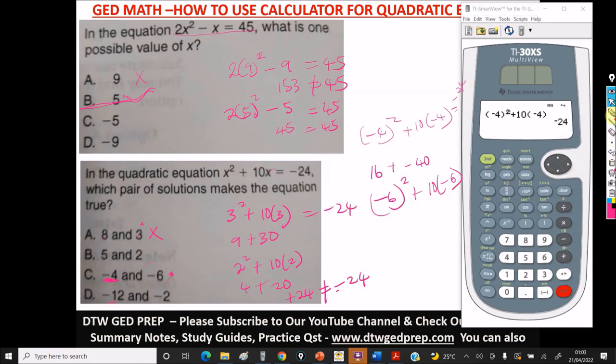So we have -6. So here, clear. So we do in parentheses negative 6, close the parentheses. When you put the square in here, if you put the square before closing parenthesis, you're going to get a different answer. Let me first get the right answer, then I'll show you so you don't make a mistake. So you do the square, then plus 10 in parentheses, negative 6, close the parentheses, enter. You see it gives us -24, so it means option C is the right answer.